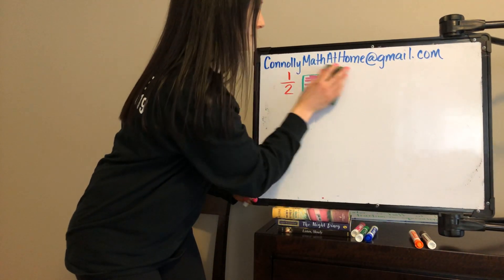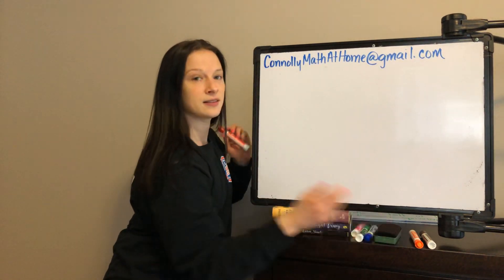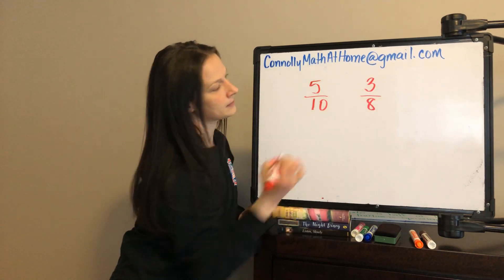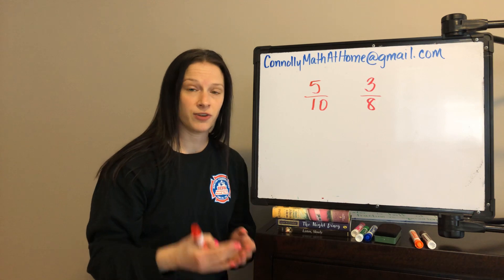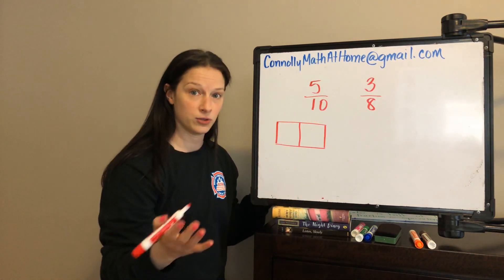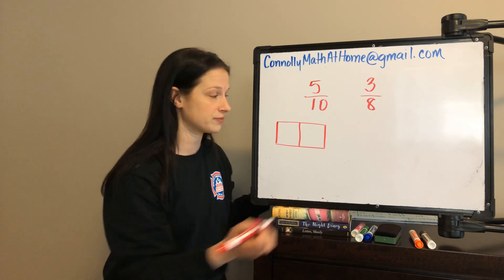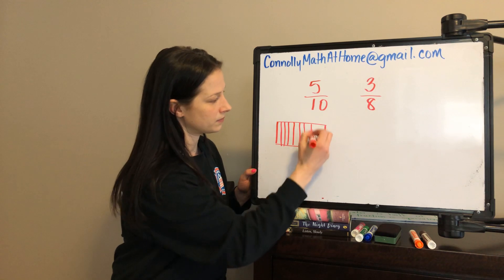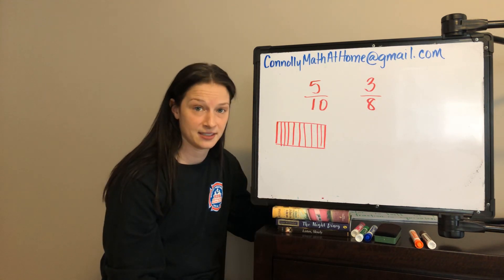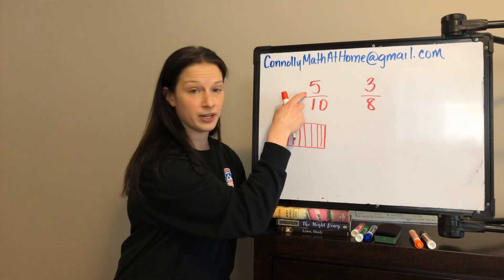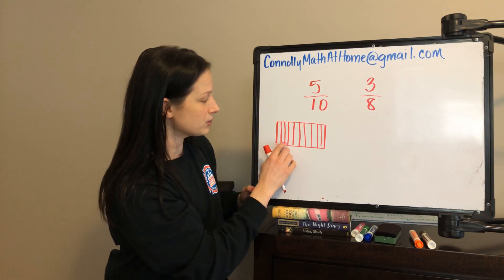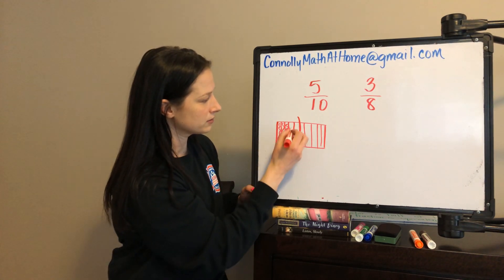When you look at these two fractions, I want you to think: is either of them equal to 1 half? When we think about 5 tenths, I ask myself: is my numerator half of my denominator? Is 5 half of 10? Yes. So I know that 5 tenths is equal to 1 half.